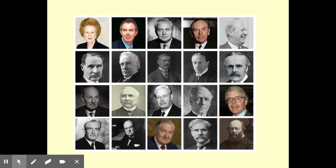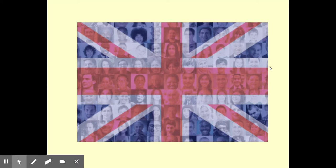The Prime Minister actually represents a specific district inside the United Kingdom, getting elected by those people, and then is chosen as party leader, which means when they're in the majority in Parliament, they also hold the position of Prime Minister — so they're in both the executive and legislative branch at the same time. Two of the more prominent Prime Ministers in recent memory are Margaret Thatcher of the Conservative Party and Tony Blair of the Labour Party.